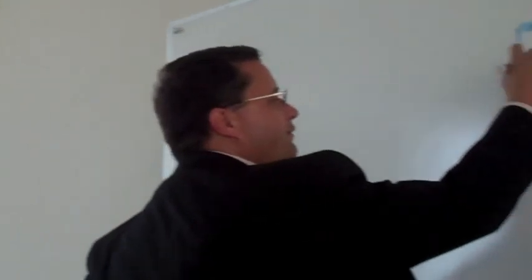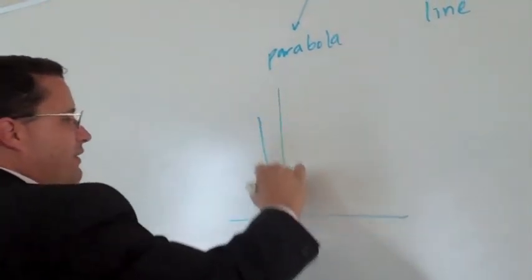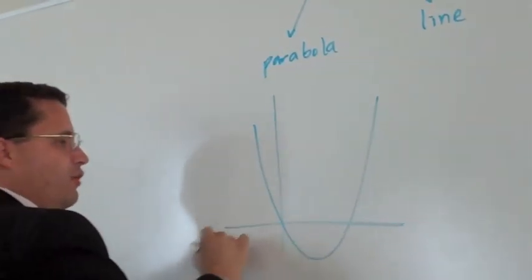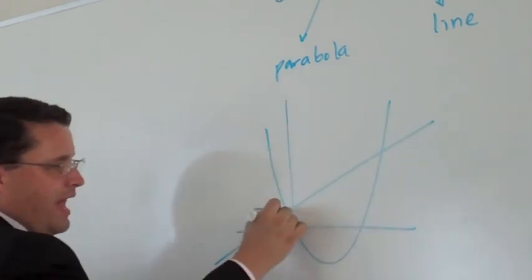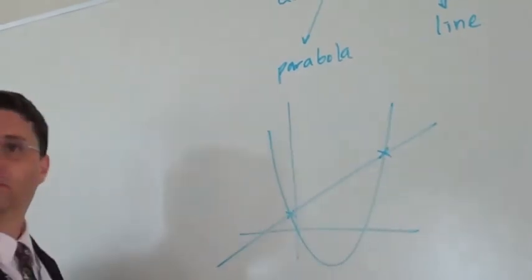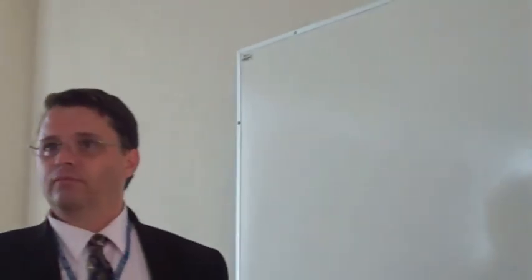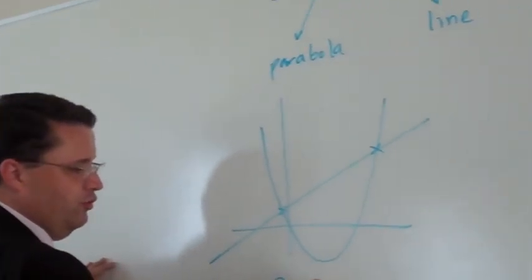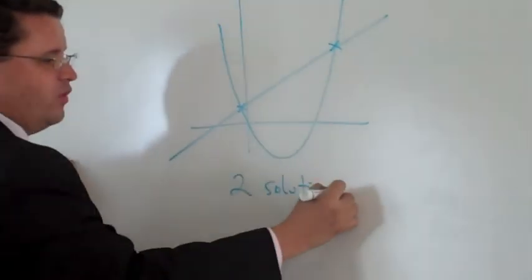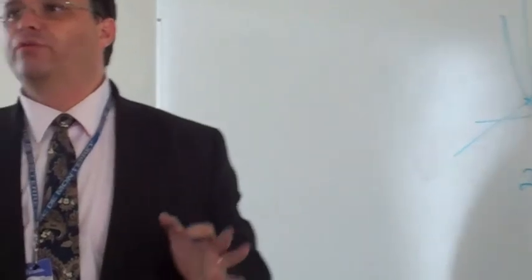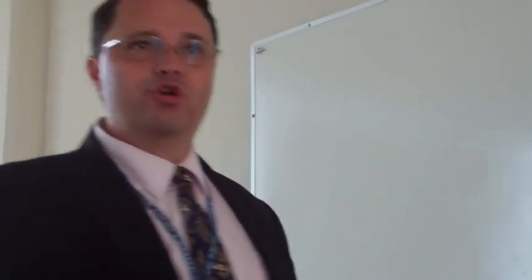We could have two solutions. For example, if we have a parabola like this and then a line that goes through here, then we have two intersection points. So that's one possibility. We could have two solutions. That's one case. What is another possible scenario? When we only have one solution.